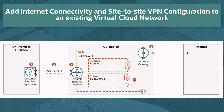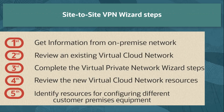Once the VPN wizard is completed, our virtual cloud network will look like this diagram. This video will cover the steps needed to run the VPN wizard and review network service components via the web console. The steps covered are: getting needed configuration information from the on-premises network, reviewing the existing virtual cloud network, completing the VPN wizard steps, reviewing the new virtual cloud network resources, and identifying training materials for configuring different customer premise equipment types.